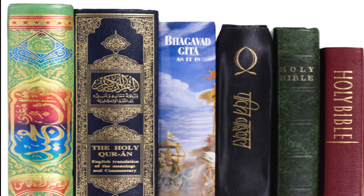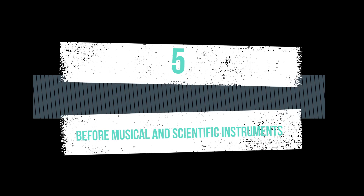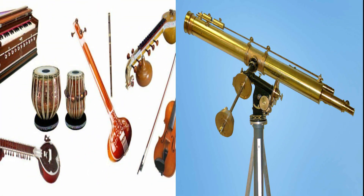The fifth point is: 'the' is used before the names of musical instruments and scientific instruments when they are in use. For example: 'He plays the violin.' 'We see the distant stars through the telescope.' When they are in use, we must use 'the' before their names. For example: 'He has bought a flute. Now he is playing the flute.'